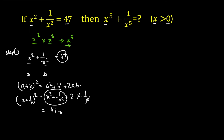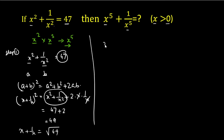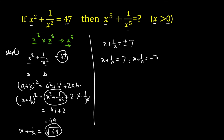So we have 47 plus 2 equals 49, giving us (x + 1/x)² = 49. Taking the square root of both sides, x + 1/x equals plus or minus 7. Since x is greater than 0, the value cannot be negative, so we take x + 1/x = 7. Let this be equation 1.